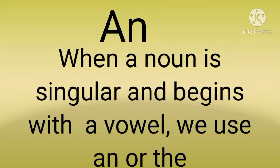जब noun singular होता है और वो vowel से start होता है — means A, E, I, O, U की sound — उनसे start होता है, तो हम 'an' use करते हैं। और 'the' हम use करते हैं जब हम किसी भी चीज़ को दुबारा introduce करते हैं — repetition के time हम 'the' use करेंगे। जैसे कि हमने पहले apple के बारे में बात की तो 'an' use किया, और second time उसी apple की बात करते हैं तो 'the' use किया।